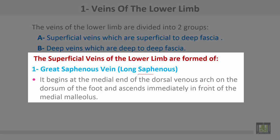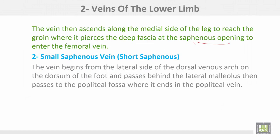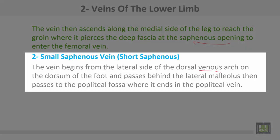The superficial veins of the lower limbs include, number one, the great saphenous vein or long saphenous. It starts at the medial end of the dorsal venous arch on the dorsum of the foot and ascends immediately in front of the medial malleolus. It then ascends along the medial side of the leg to reach the groin, where it pierces the deep fascia at the saphenous opening to enter the femoral vein.